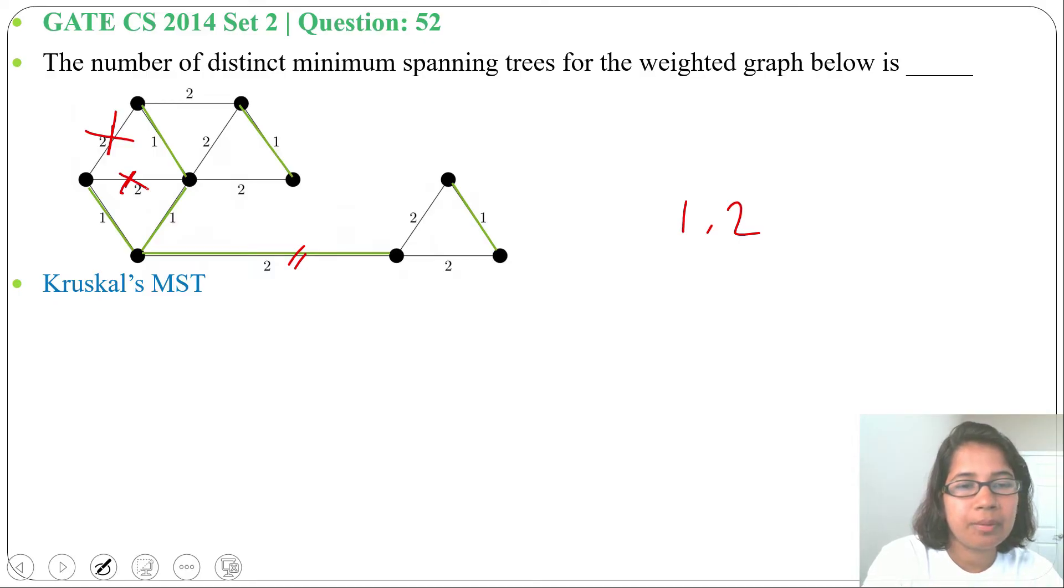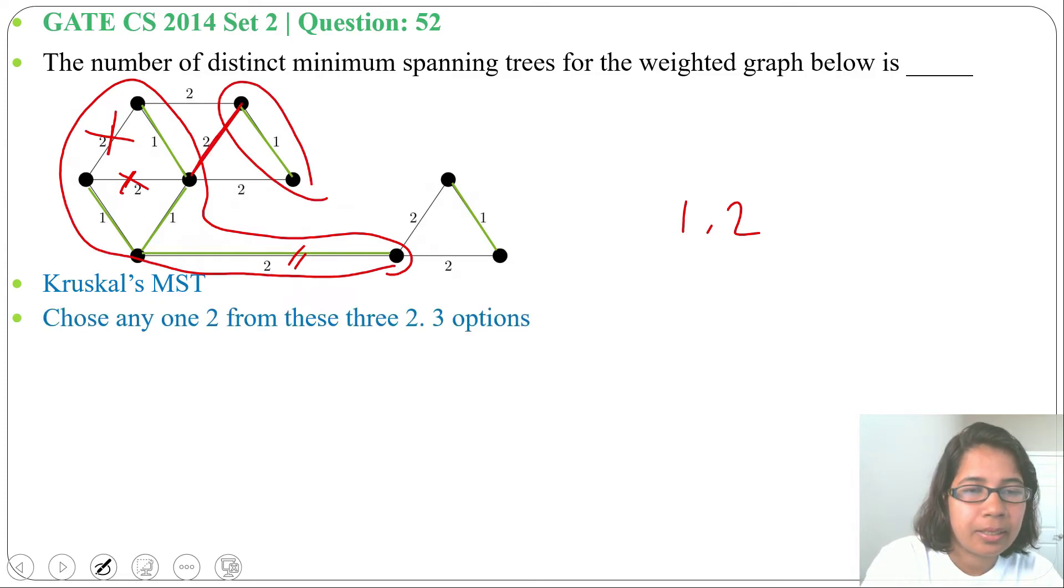Next, any one 2 we can choose from these 3, as any one we choose this will connect these two subtrees. There are 3 options. We can choose any 1 from these 3 twos.